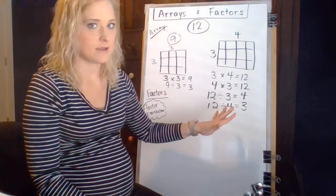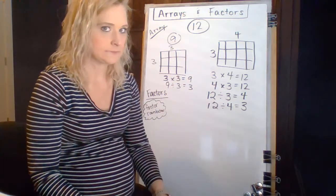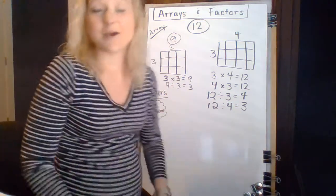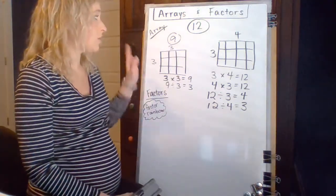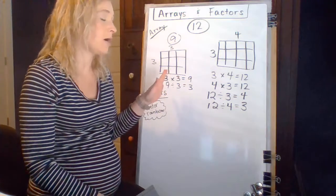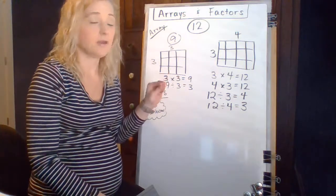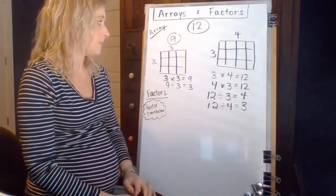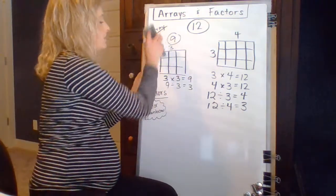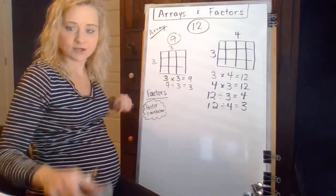But rectangular arrays have 4. Does that make sense? I hope it's making sense to you guys. So hopefully that helps you with the first part of that worksheet. Arrays, they are building a certain number in rows and columns and make that perfect rectangle.